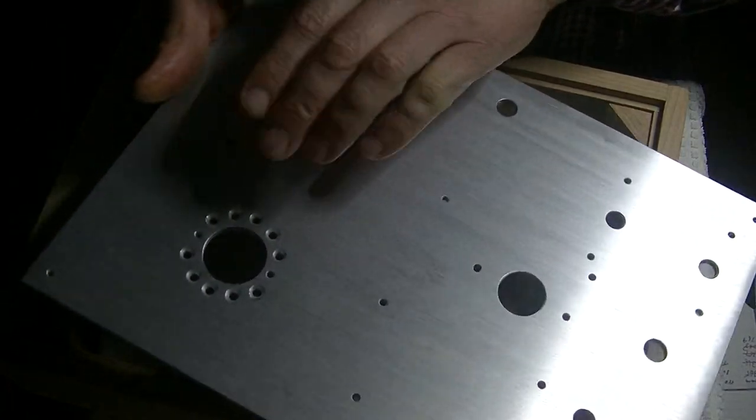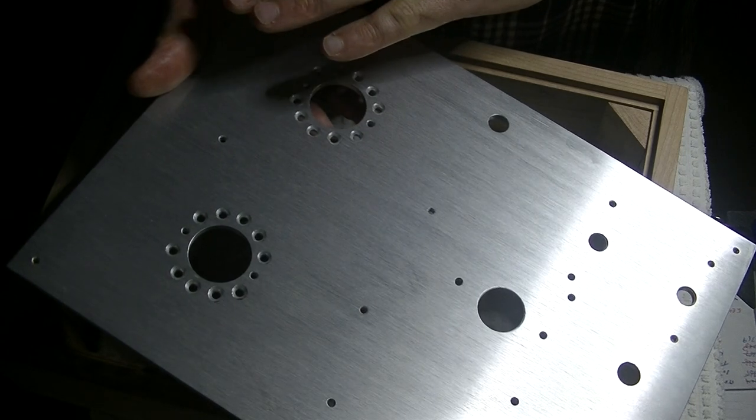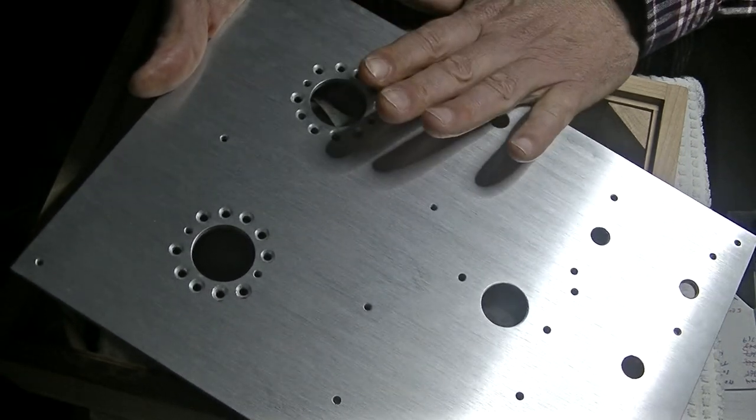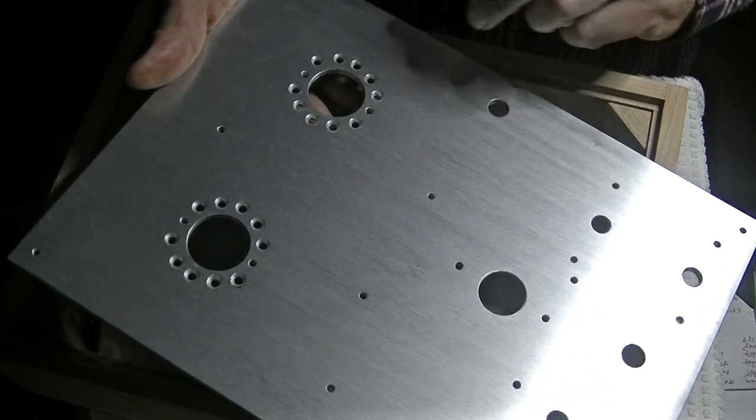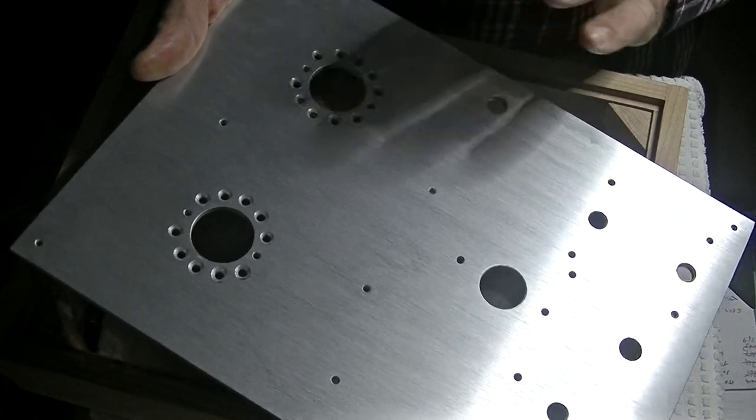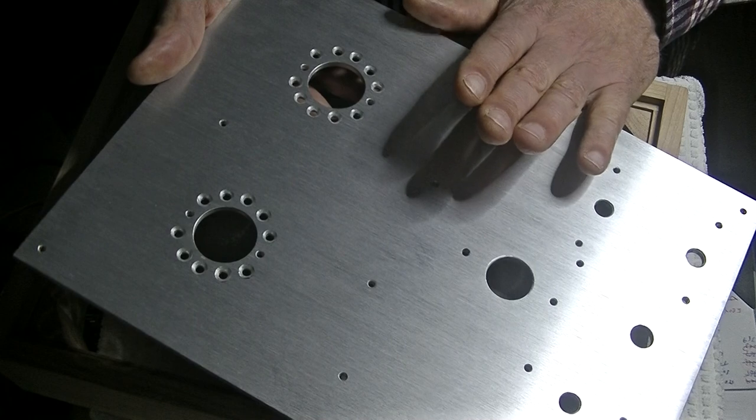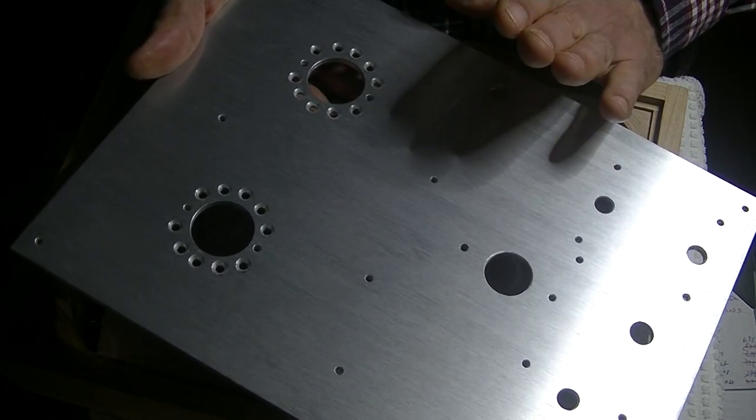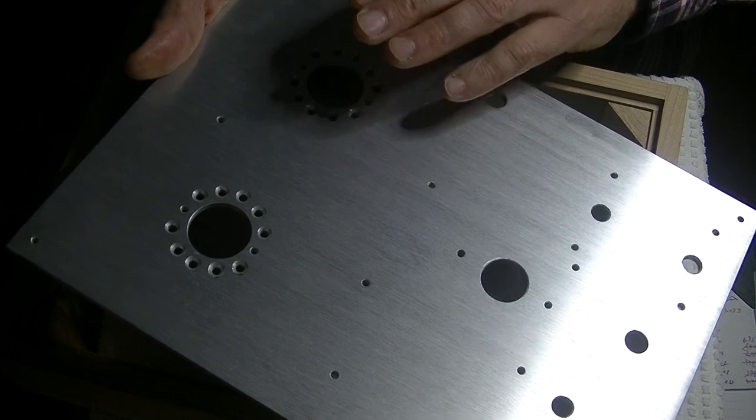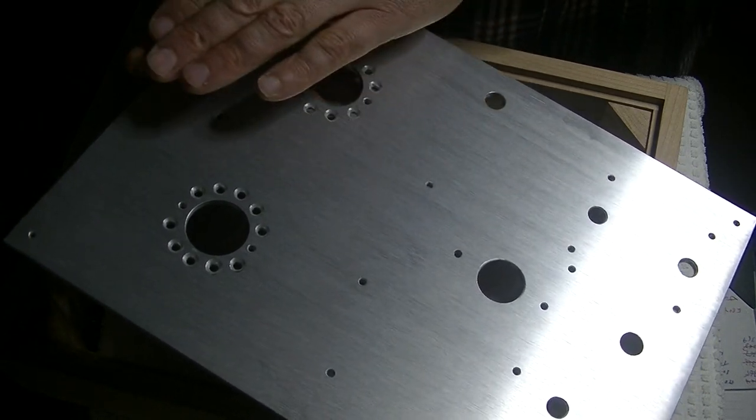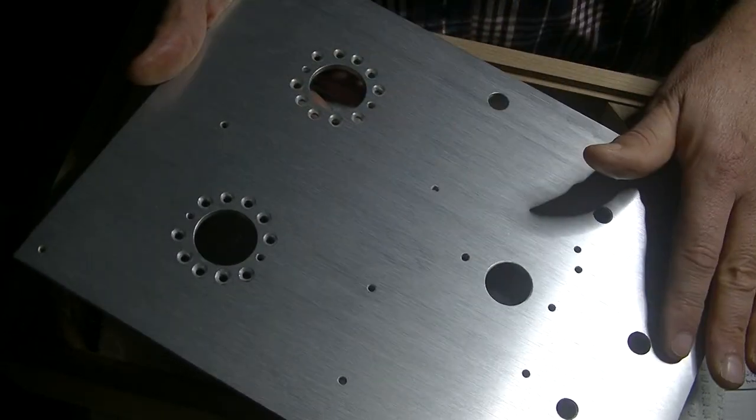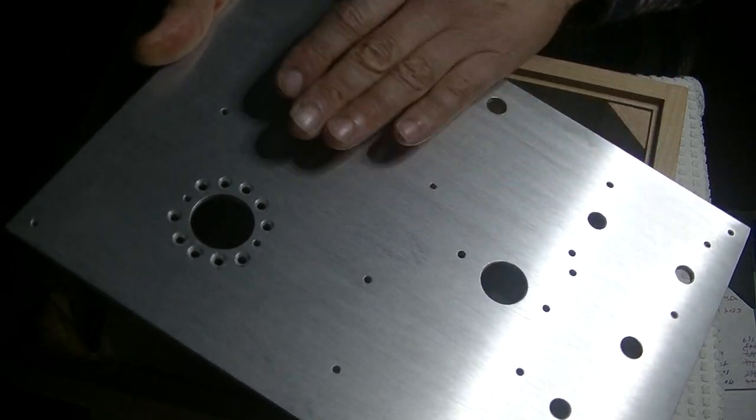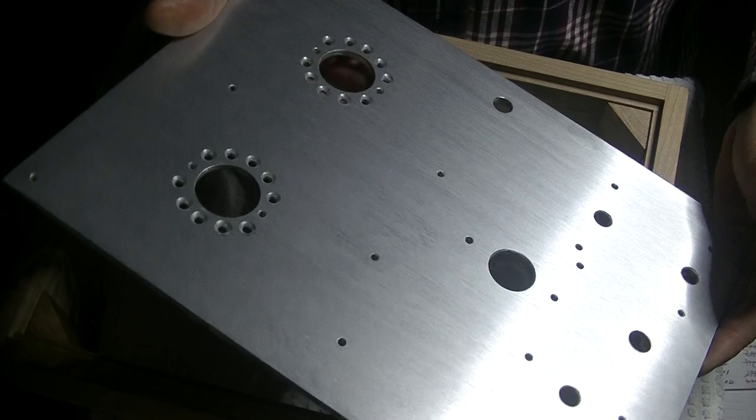This top plate is made in aluminum, which has some wonderful properties. One, it machines very nicely. I can do stuff like this quite easily. And now we are working on setting up a CNC. It will be perfect for the CNC. Two, it allows us to do a lovely brushed finish like this. And it takes a nice, basically a hand-buffed wax surface really nicely.